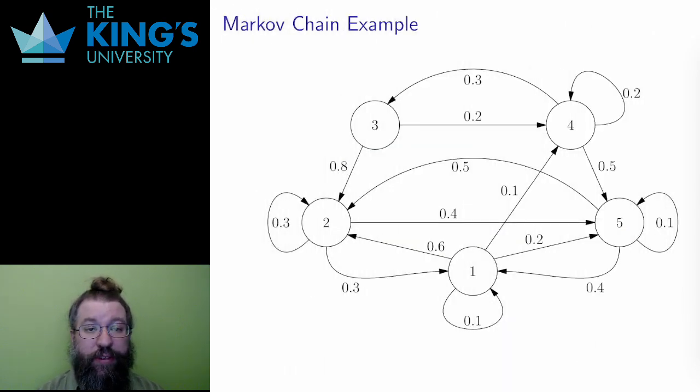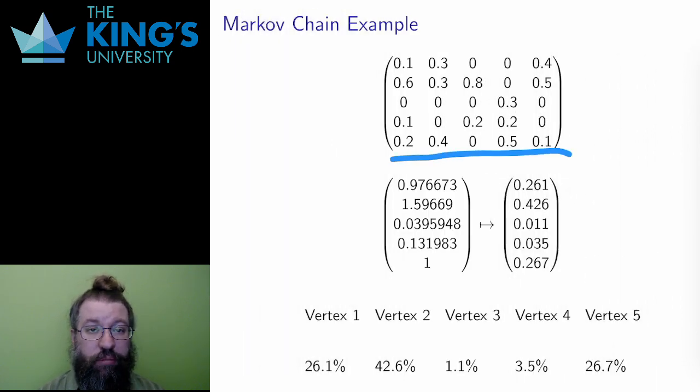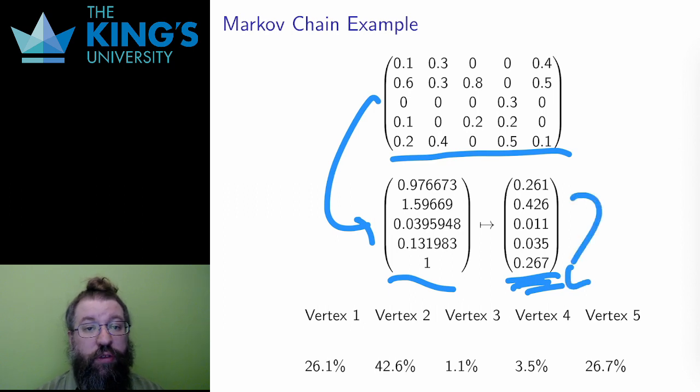Finally, here is another example. This is a graph with five states and transitions between them. And this is the matching matrix. Again, I asked a computer for the dominant eigenvector, and I scaled it to be a stochastic vector. These are the probabilities for ending up in each of the states. Again, this doesn't depend at all on where I start. Eventually, for any starting point, these probabilities will settle down to exactly the same values.